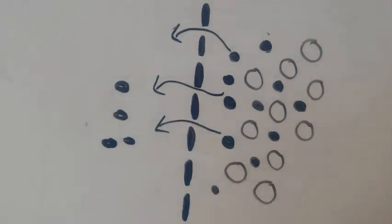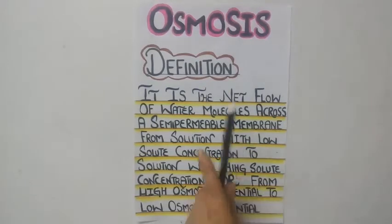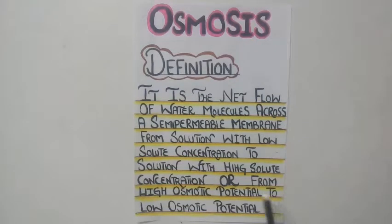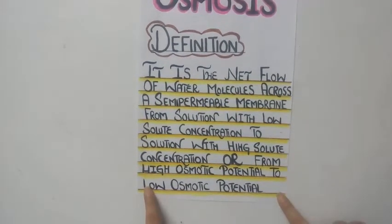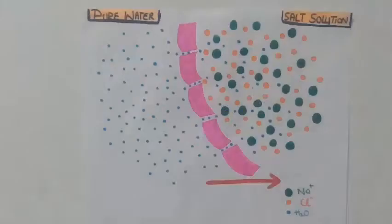This shows that a semi-permeable membrane allows only certain types of particles to pass through it. We also have completely permeable membranes, such as the cell wall of plants, which is completely permeable. Urea is almost a completely permeable particle which will easily pass through the membrane. Osmosis is defined as the net flow of water molecules across a semi-permeable membrane from a solution with low solute concentration to a solution with high solute concentration.